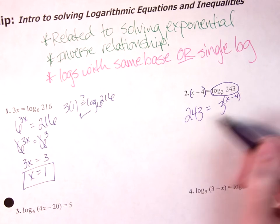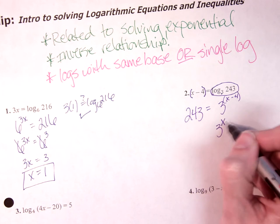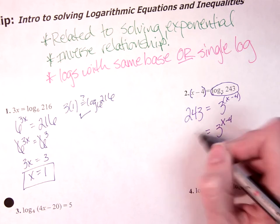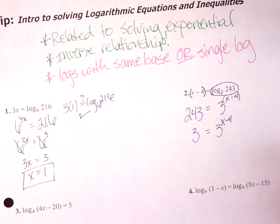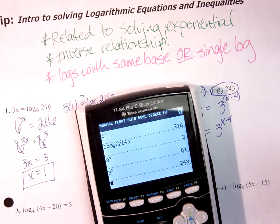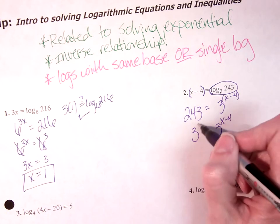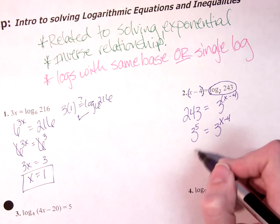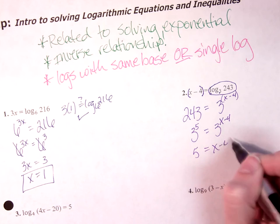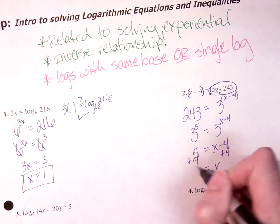This is 3 to the x minus 4 equals 243. So again, I want to write 243 as some power of 3, 3 to the x minus 4 equal to 3 to some power. Got your chart, or we're going to kind of guess and check. 3 to the 4th is 81, so 3 to the 5th, there's my 243. And at that point this says 5 equals x minus 4, add 4, and x equals 9.